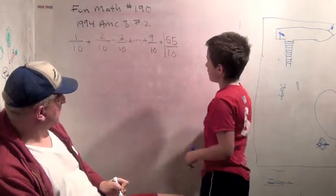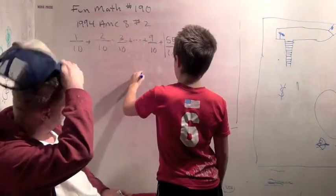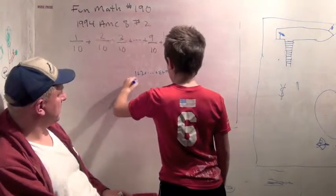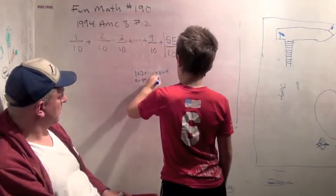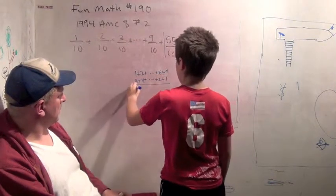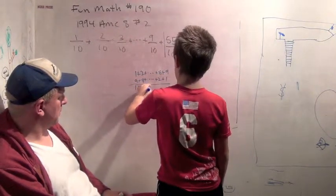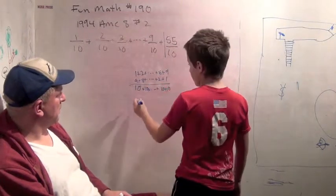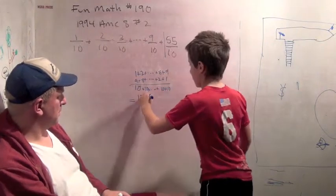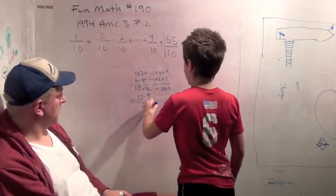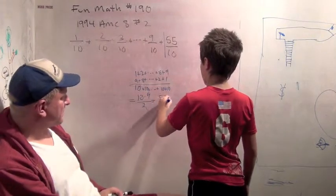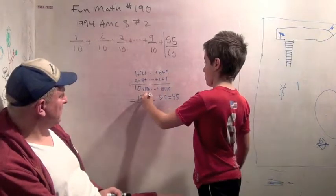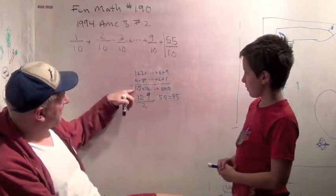Show me how you would add up 1 through 9. We'd write it backwards. Okay, you can write it backwards. And then we get 10 plus 10 plus 10 plus 10. And this is 10 times 9 over 2, or 5 times 9, or 45.